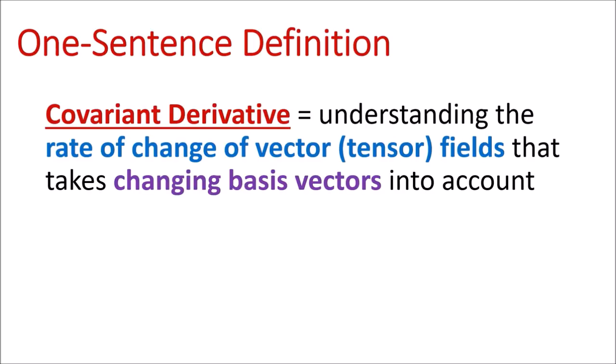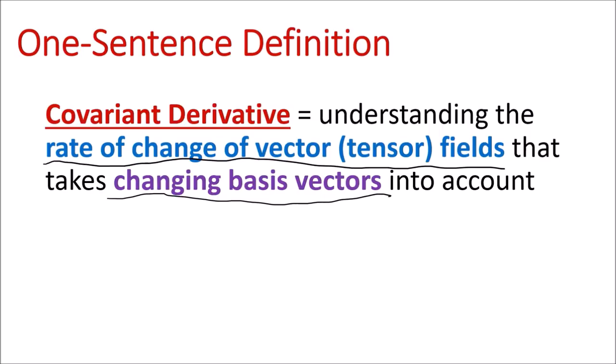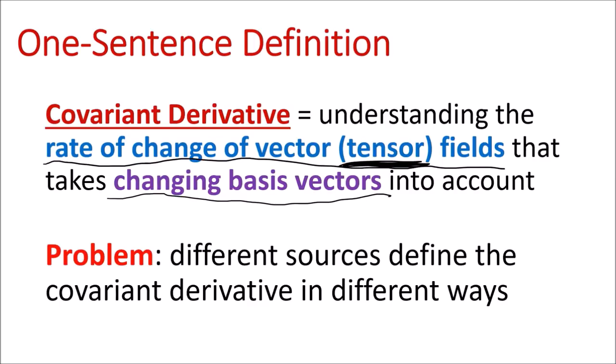If I were to describe the covariant derivative in one sentence, I would say that it's a tool for understanding the rate of change of vector fields in a way that takes changing basis vectors into account. In its most general form, the covariant derivative works for general tensor fields as well. Different sources will describe the covariant derivative in different ways, and it can be confusing to understand what it really is when looking at multiple sources.